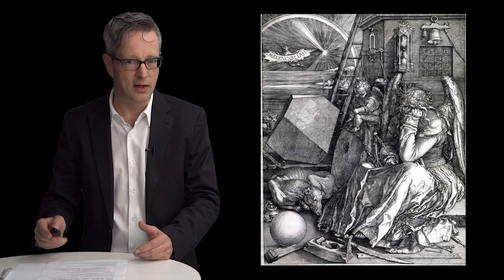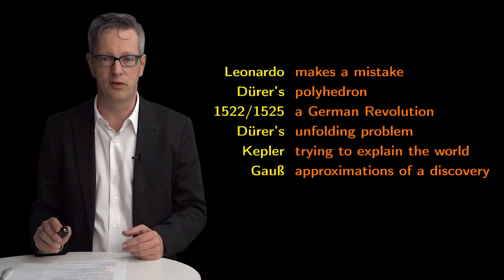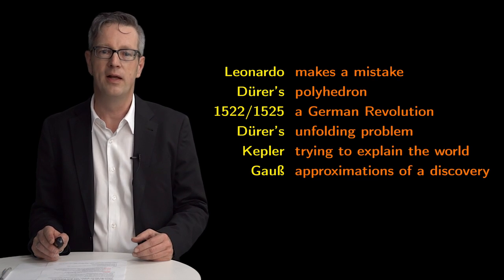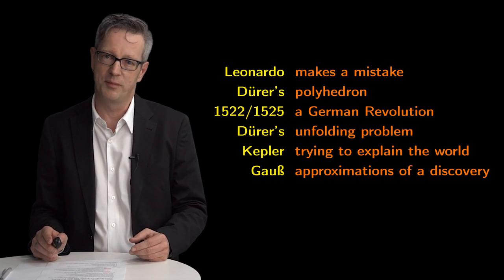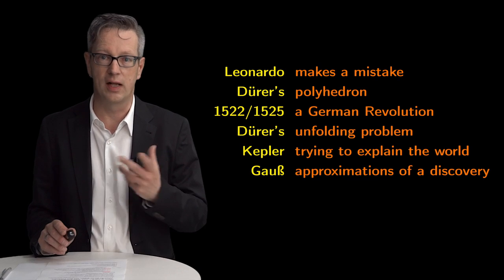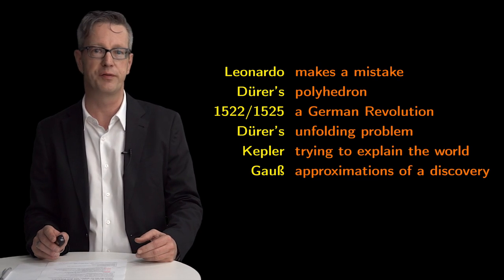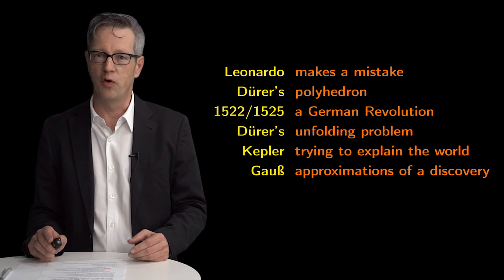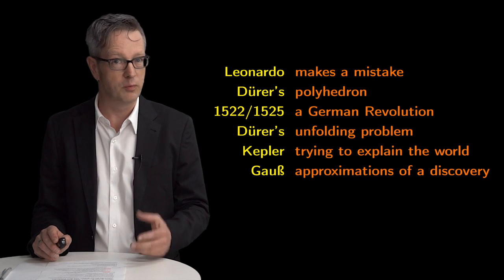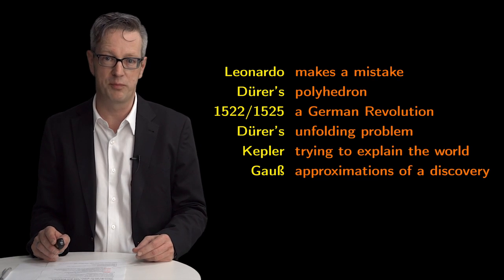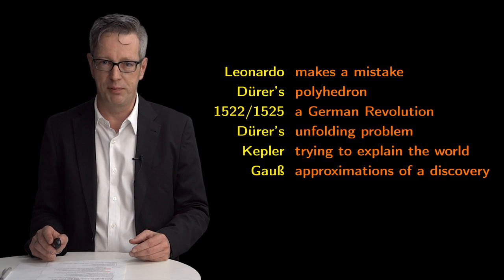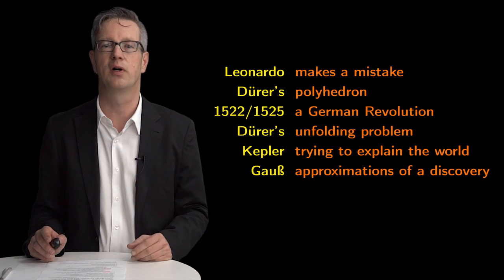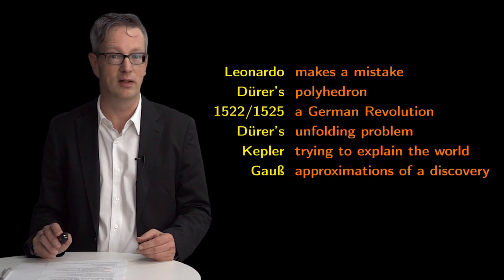My plan is a bit larger. Here is the plan. We will start not with Dürer, but with Leonardo a few years earlier. We will watch him doing the first mistake. We will see the first stars. Then we will look at Dürer's polyhedron, the one from the melancholia. Then I have to tell you about the German revolution of 1522-1525. That is because that one is not in the history books. We will go back to Dürer and his unfolding problem, which is a great unsolved geometry problem still. We will watch Kepler doing his polyhedra and his stars, and in the end, in case the three giants of Leonardo, Dürer and Kepler aren't enough, Gauss is another one.